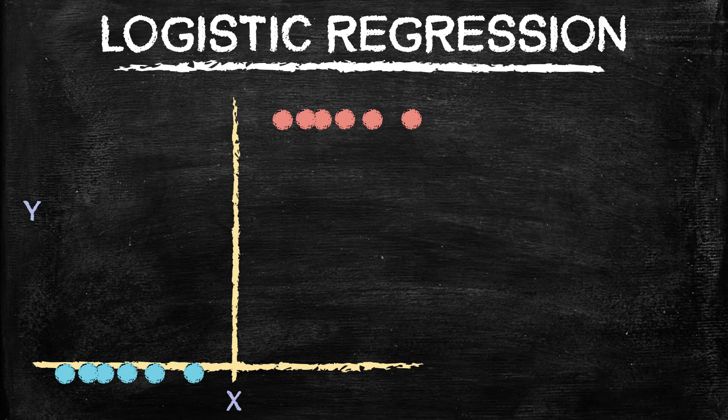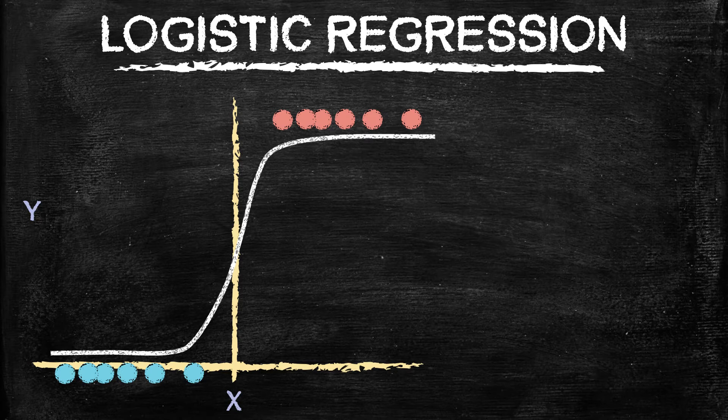But how do we do that? Well, in order to do that, we want some sort of line that looks like this, where the features in the middle may be closer to like 0.5, 0.6, 0.4, somewhere around there. But as you get farther out, it's more confident being zero class or the one class, depending on what side you're on.